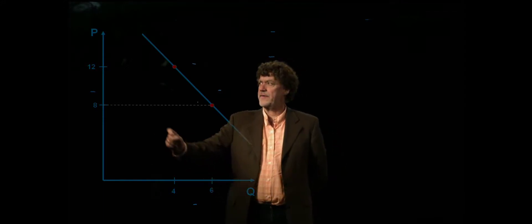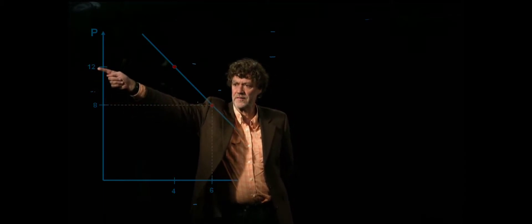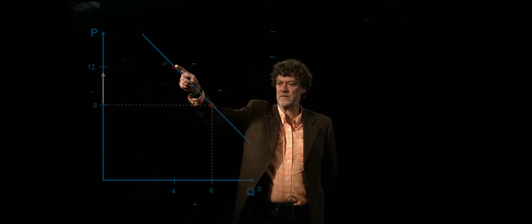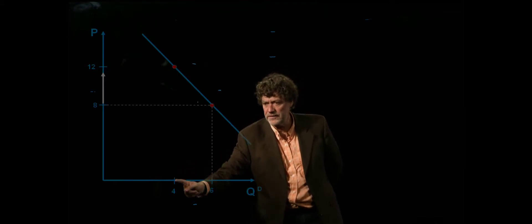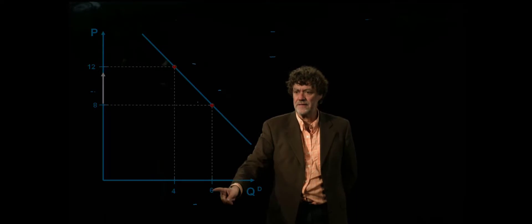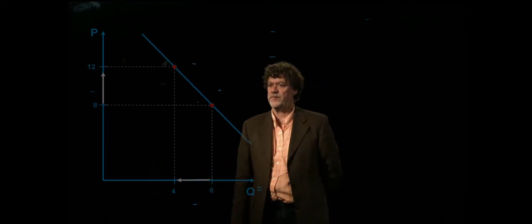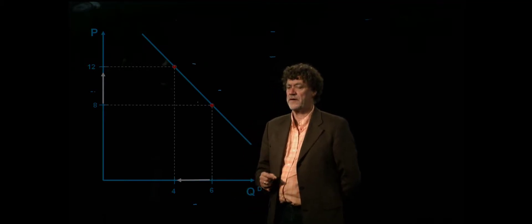And if the price increases from 8 to 12, then if we go again to the demand curve, then straight down, we can see that the quantity demanded decreased by 2 from 6 to 4. How can we calculate and interpret the slope?